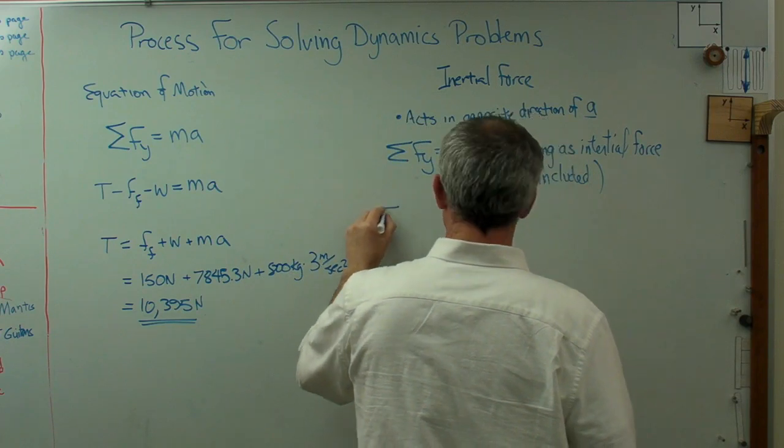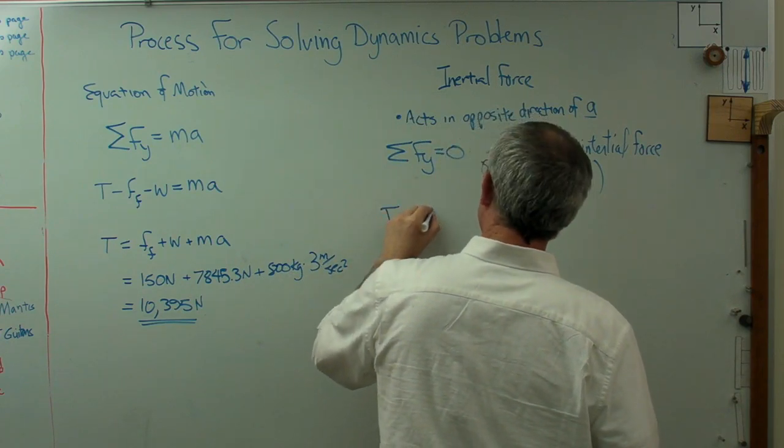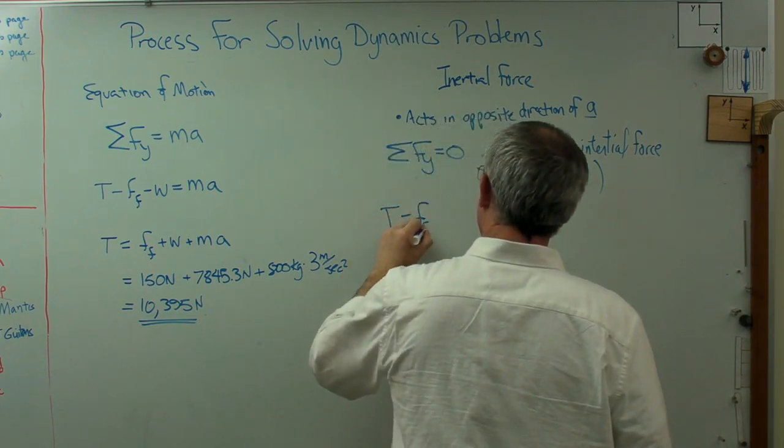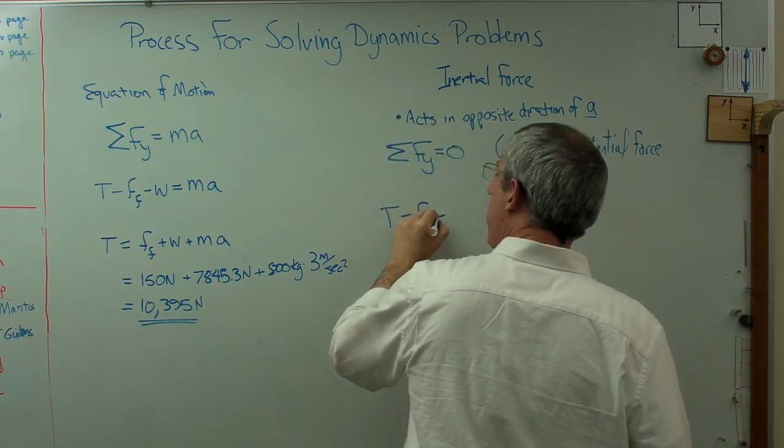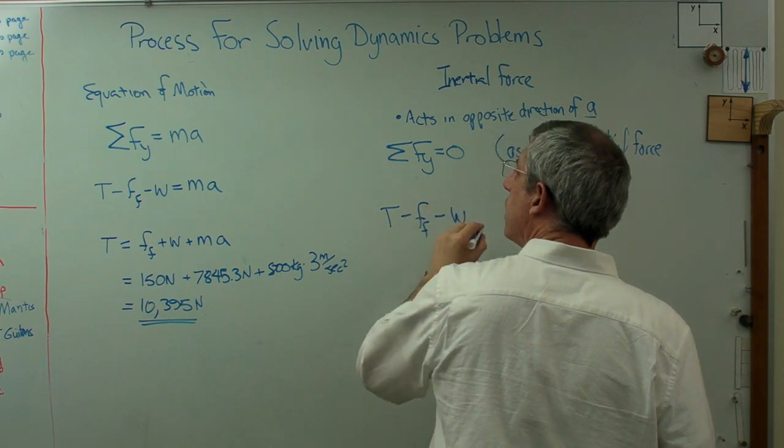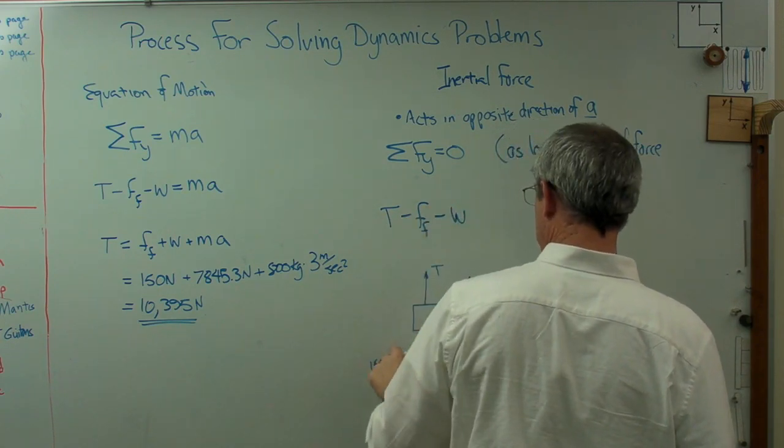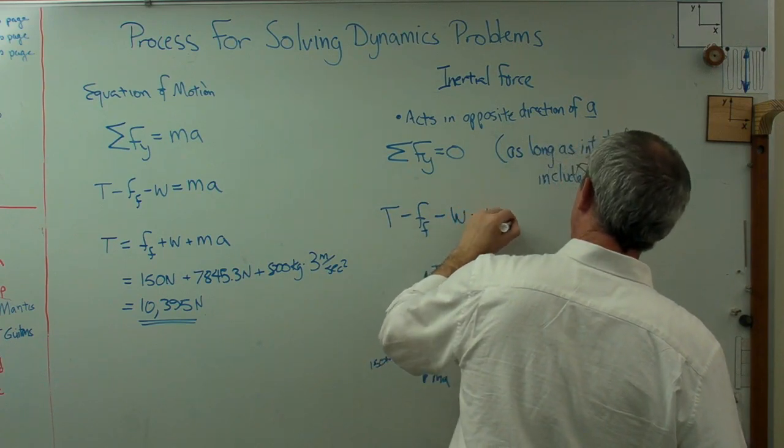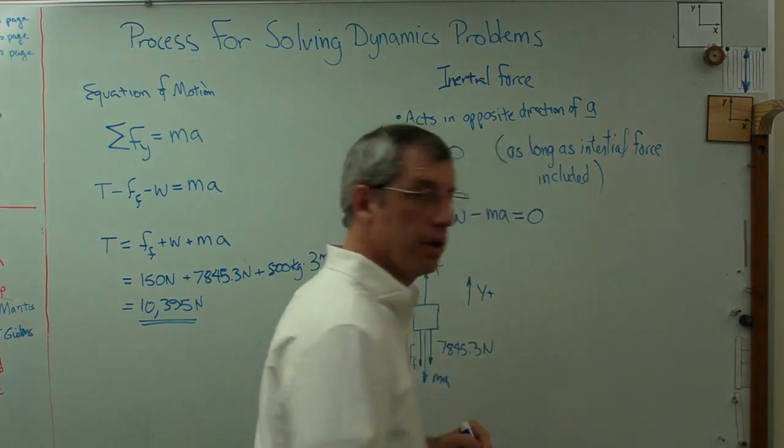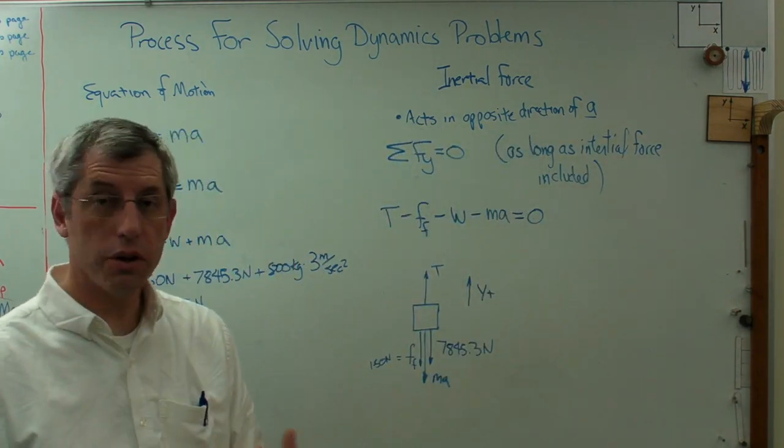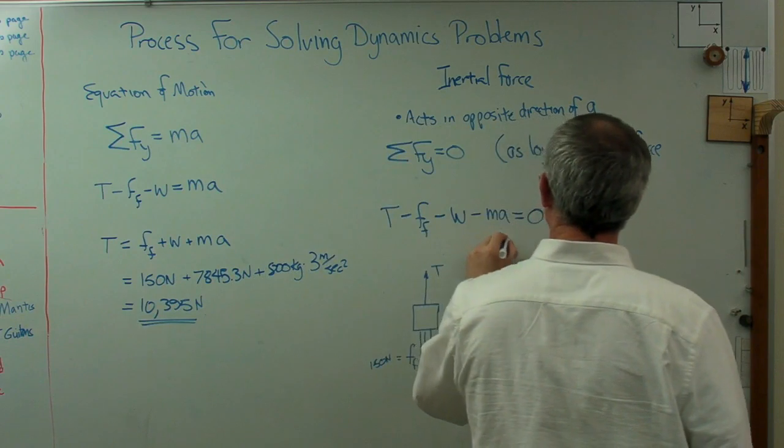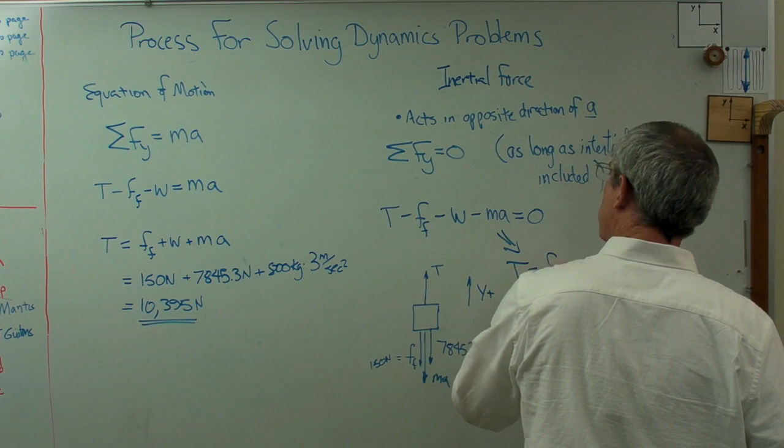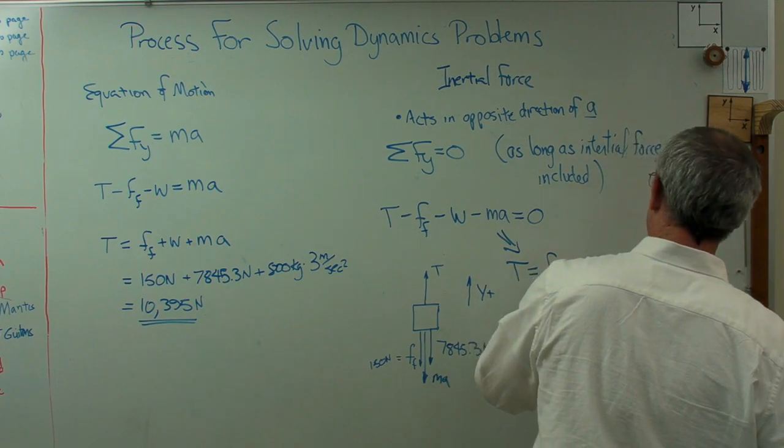It's actually a pretty good way to do things because if you use inertial force, even though this isn't technically a force, it's got the units of force, and if you use it like a force, treat it as a force, you get the right answer. Now, dynamics problems, just like statics problems, you're summing the forces and they are equal to zero. I can do that. So I have T minus friction force minus the weight minus the inertial force ma, and that has to equal zero.